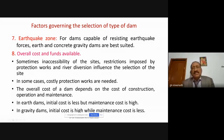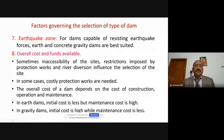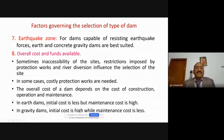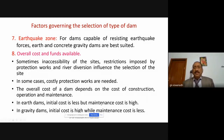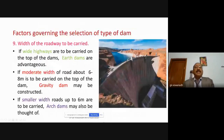If we take a gravity dam, initial cost is very high but maintenance cost is less. For an earth dam, initial cost is less because we use locally available earthen material and not much skill level is required. However, the maintenance cost is very high due to seepage through and beneath the body of the dam, which creates a lot of problems and requires extensive maintenance.